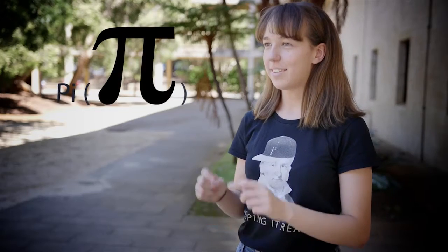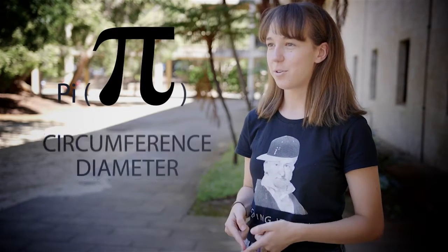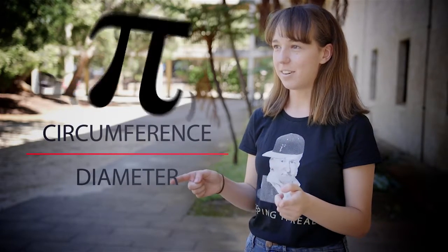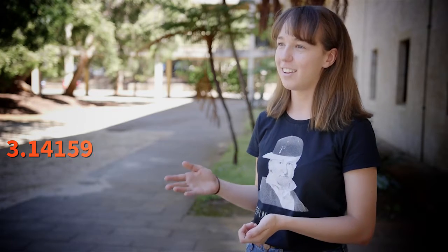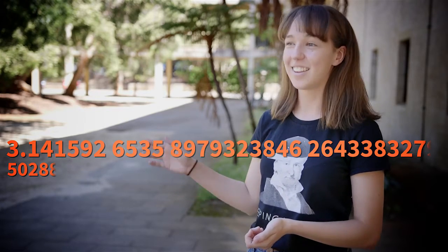Pi is the ratio between the circumference of a circle and its diameter. This ratio has to be an irrational number, which means its decimal places go on to infinity, so 3.141592, etc.